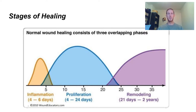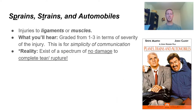The two-year timeframe will surprise a lot of people. You may have heard you should be fully healed after six months or so, but remodeling takes a long time — that's really where physio comes in and helps influence the tissue stress. We're going to spend a lot of time on those different phases, but first we're going to talk about sprains and strains.